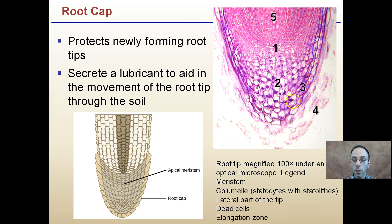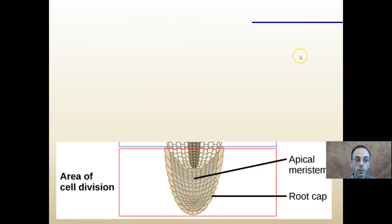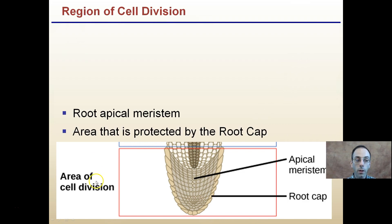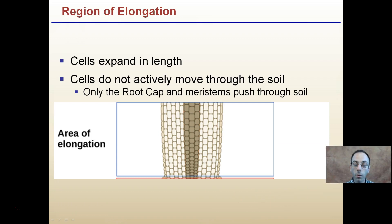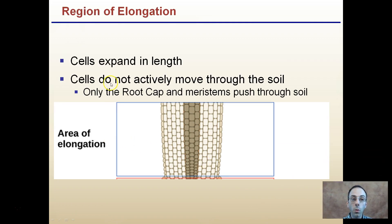The meristem regions are numbered 1 through 5, with the highest rate of mitosis occurring at number one. The root apical meristem is located here, protected by the root cap. Working back from the root tip, we have the area of elongation where cells expand in length. Cells are not being moved through the soil here - they're just expanding. Only the root cap and meristem are actually pushing through the soil.